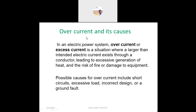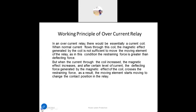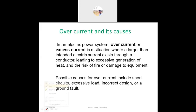Now let's see the causes of overcurrent. Overcurrent is a situation where the current exceeding the normal level flows through a conductor, leading to excess heat generation and risk of fire or equipment damage. The main causes of overcurrent include short circuit, excessive load, incorrect wiring, and ground fault.